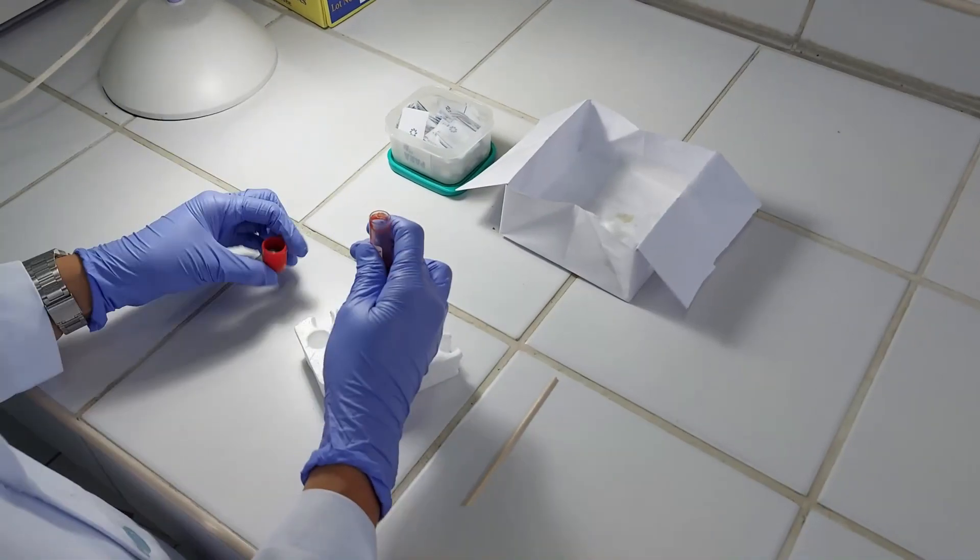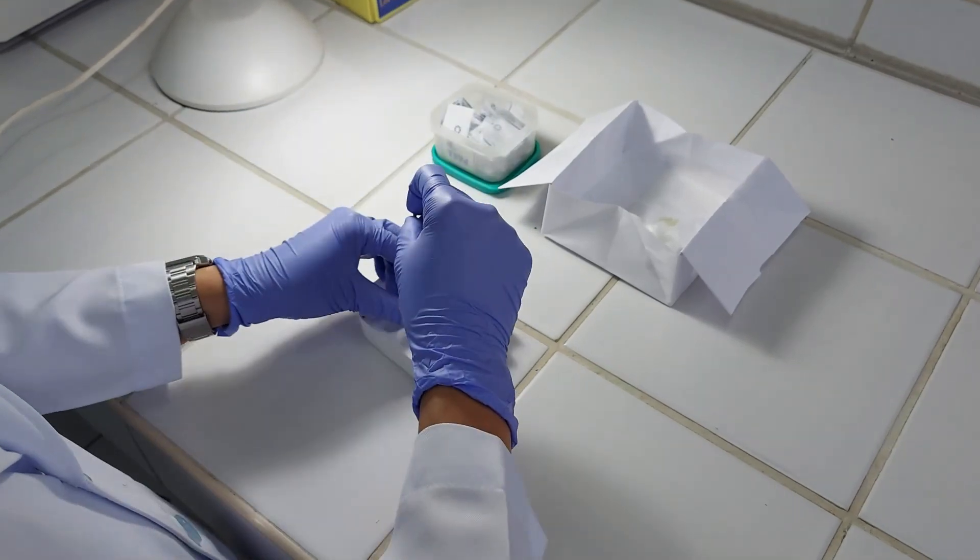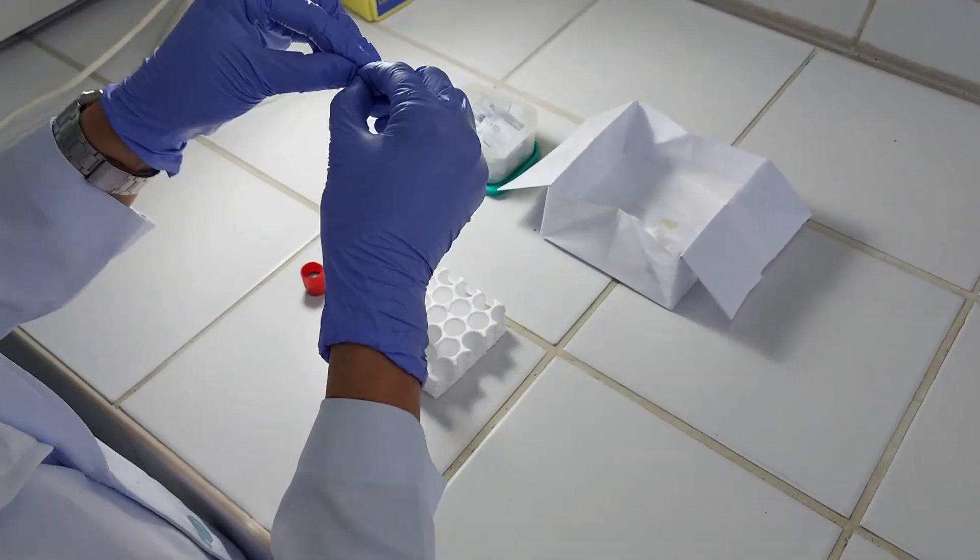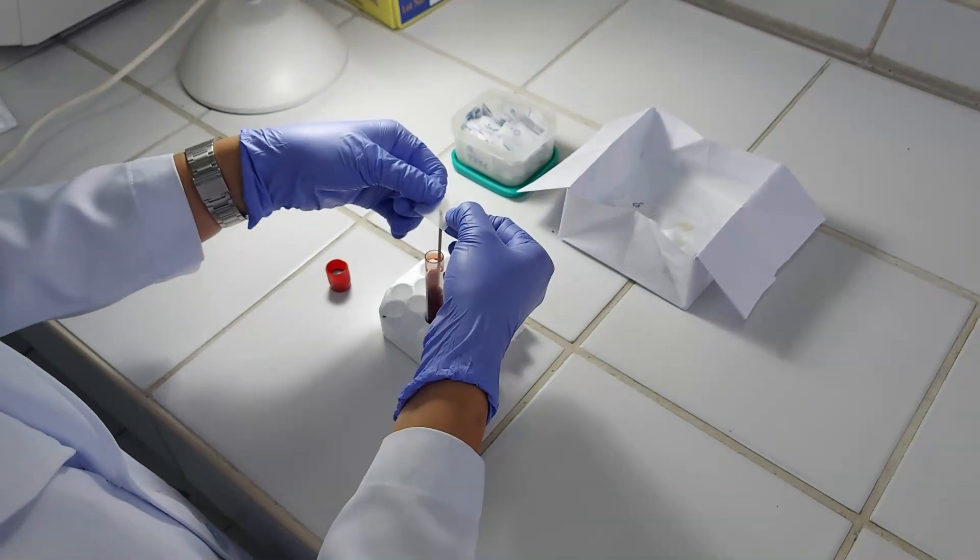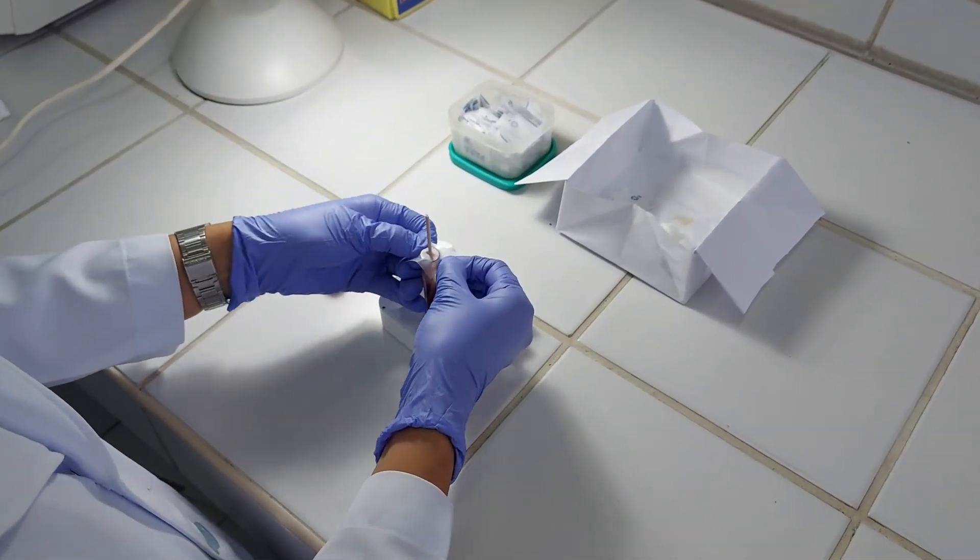The next step is to place an applicator stick or rod in the tube and cover it with a stopper. In this case, our stopper is a Nesco film to put the stick in place.